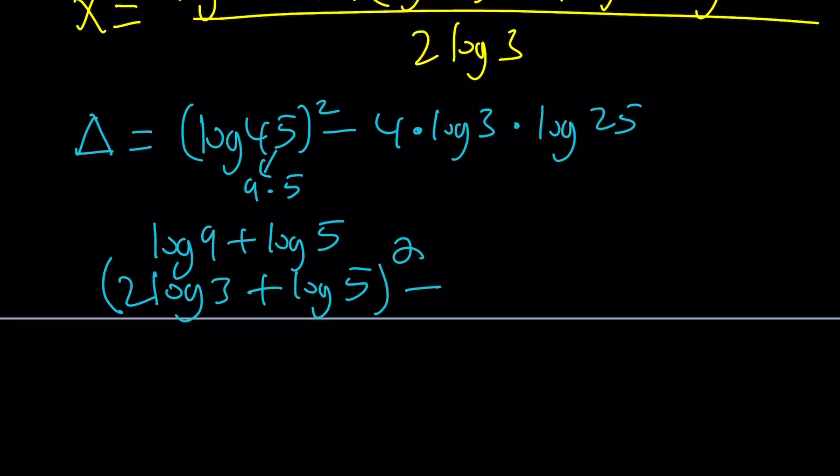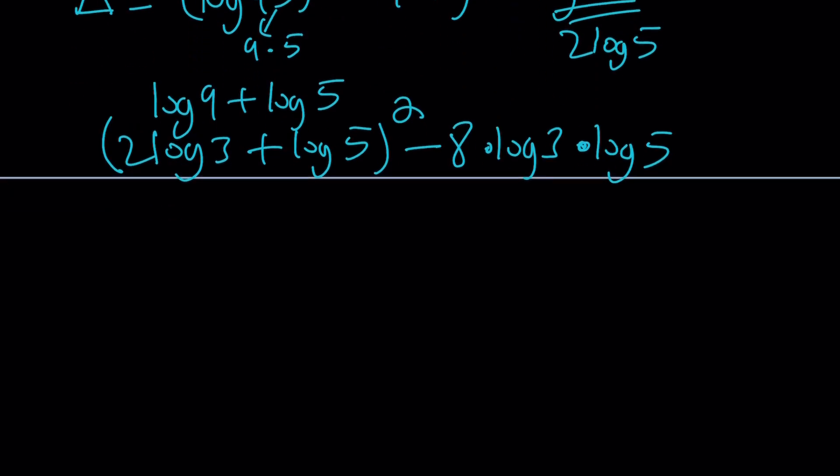And from that, I want to subtract 4 times log 3 times log 25, which can be written as log 5 squared. And that is 2 log 5. So that's actually going to give us 8 here and then times log 5 here. Make sense? So I basically simplified everything, and this should give us something nicer. Take a look.